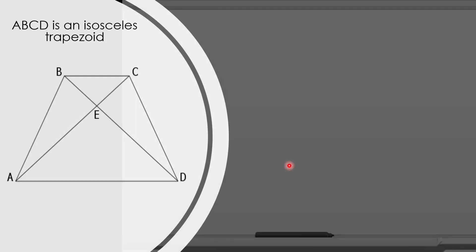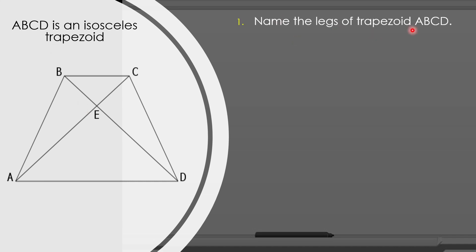Let us have this activity. ABCD is an isosceles trapezoid. Let us answer the following. Name the legs of trapezoid ABCD. The legs of this trapezoid are side AB and side CD.